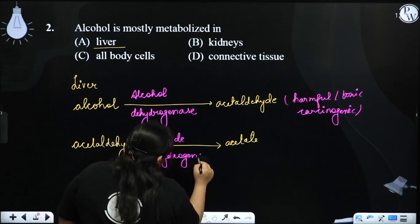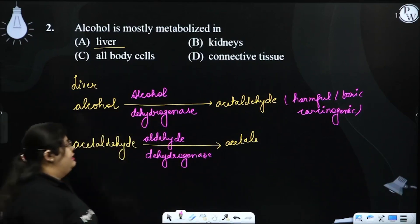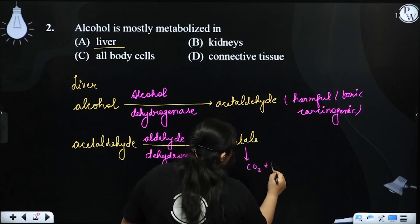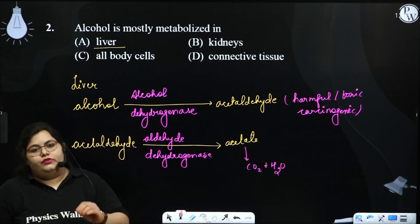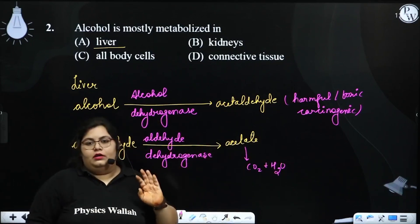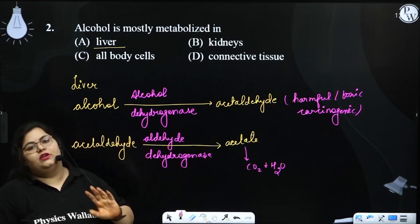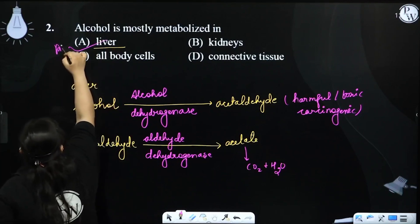Aldehyde dehydrogenase helps convert to acetate. Acetate is further broken down into CO2 and H2O. This pathway we discussed is one pathway of alcohol breakdown. Other pathways are also there. This takes place within your liver, so the right answer is straightaway liver.